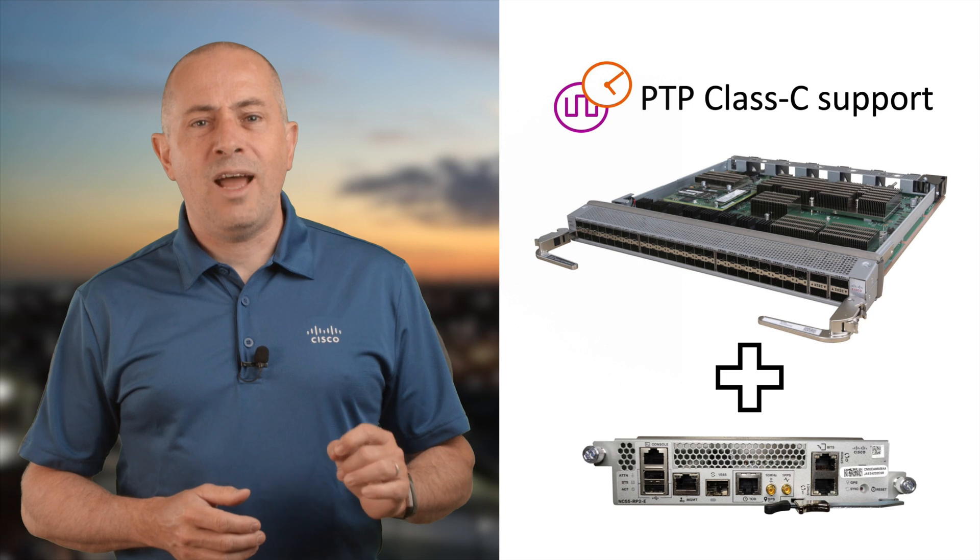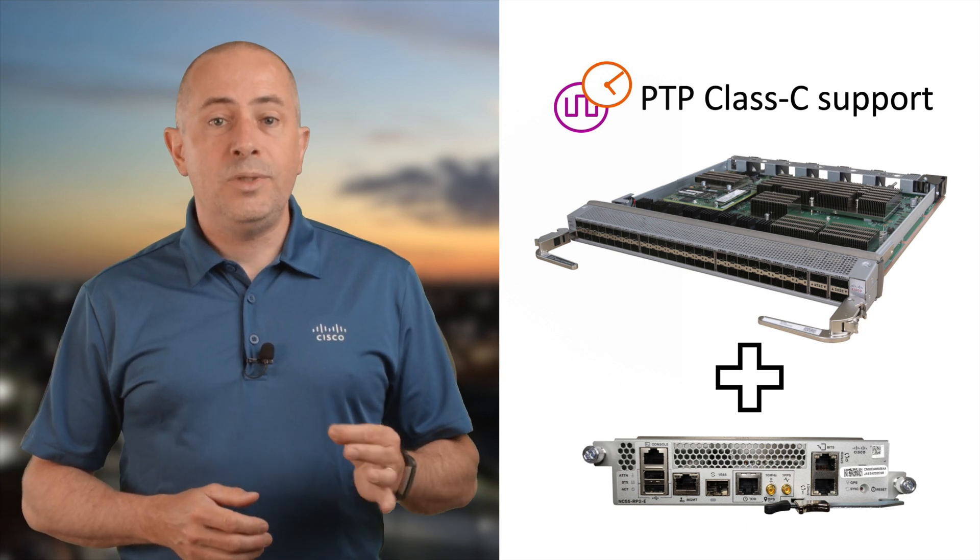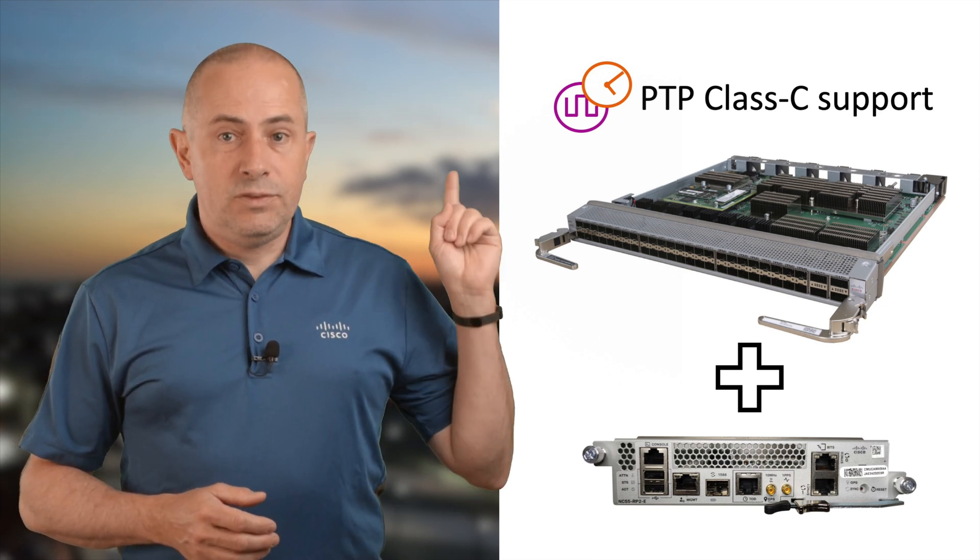Finally, this line card is the first in the NCS5500 chassis to support Class C timing precision. But it's mandatory to have it equipped with the new route processor, the RP2E, which we presented in a separate video. Several rules will apply when targeting Class C timing quality in a chassis — for example, do not mix Class B and Class C line cards. If you need more details, as it can be complex, I advise you to contact your Cisco representative.